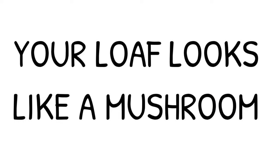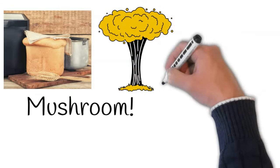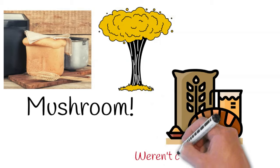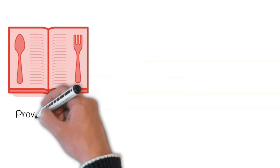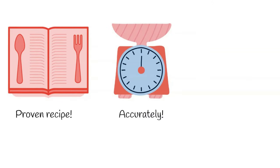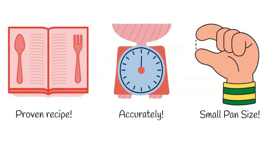Your loaf looks like a mushroom. When the loaf you baked turned out like the mushroom cloud that follows a nuclear explosion, then in most cases, it is happening because ingredients weren't correctly proportioned. However, suppose you used a proven recipe and measured everything accurately. In that case, the mushroom shape could be simply because of the small pan size.